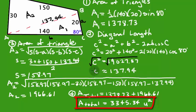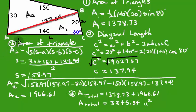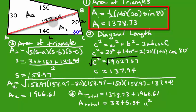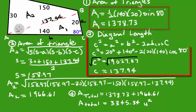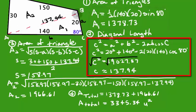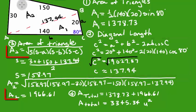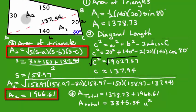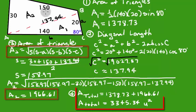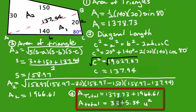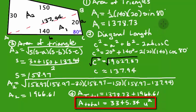Let's review the steps: divide the figure along the diagonal; calculate the area of the first triangle using the SAS area formula; use the Law of Cosines to find the length of the diagonal; use Heron's formula to calculate the area of the second triangle; then add the two areas together to get the total area. Check out other videos and interactive quizzes at MathGuide.com.